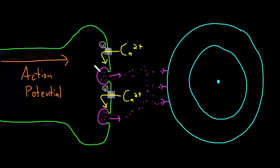So this is the way that the information contained in the frequency and duration of a train of action potentials is converted into the amount and the duration of neurotransmitter present in the synaptic cleft. That information is then passed on to the target cell by neurotransmitter binding to receptors — the number of receptors bound and the duration of binding are related to the amount and duration of neurotransmitter in the synaptic cleft.